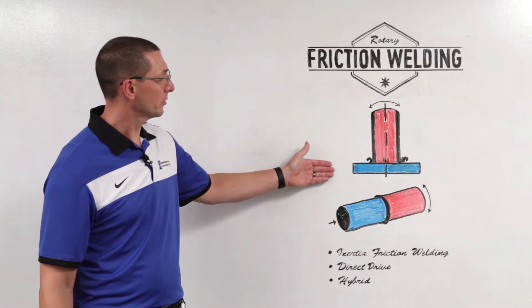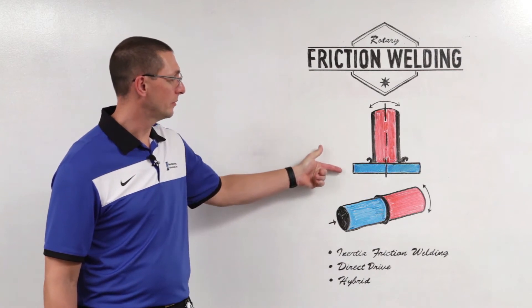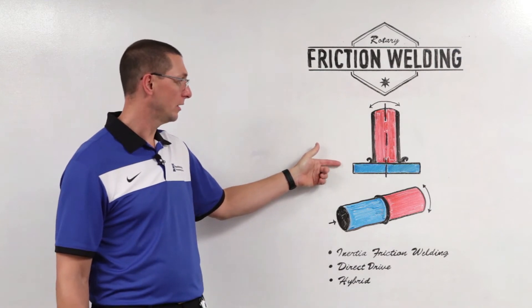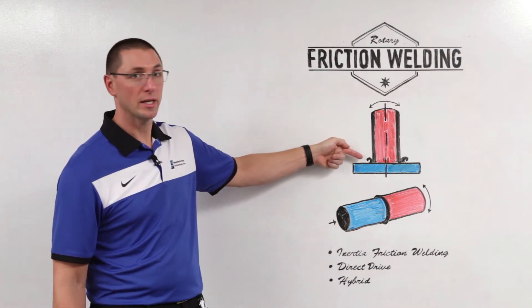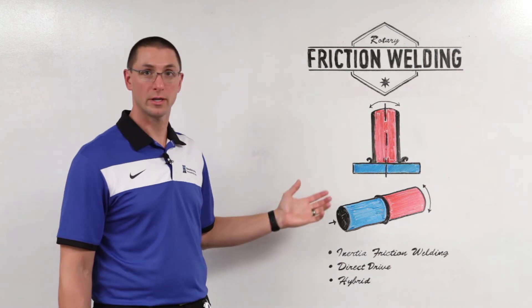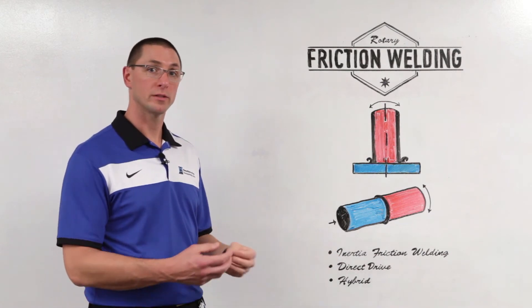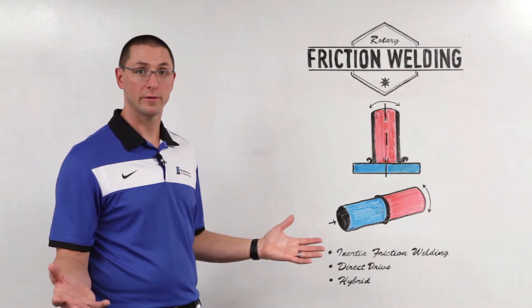So for example, if we're trying to weld a thin wall tube to a plate, we'd be rotating the tube holding the plate stationary. Now we want to make sure that we get penetration of this tube into the plate in order to get a successful weld. Now the plate is going to act as a heat sink and wants that heat to dissipate very quickly.